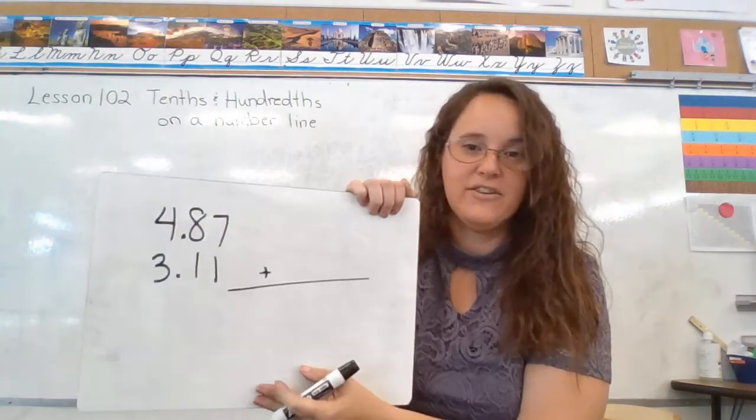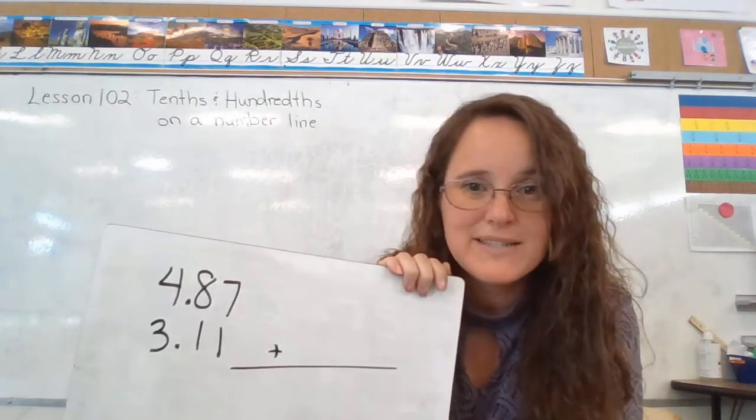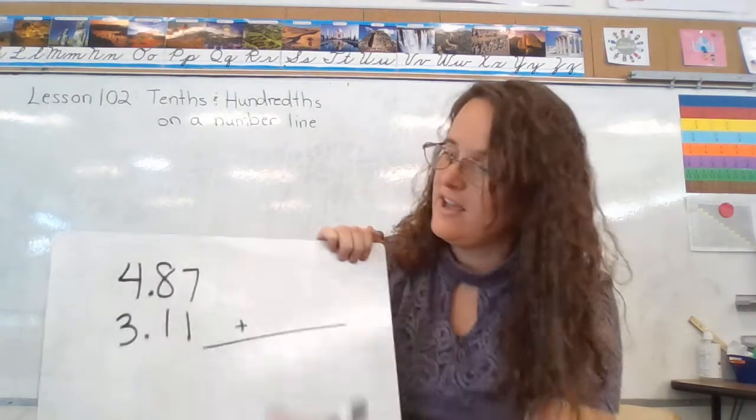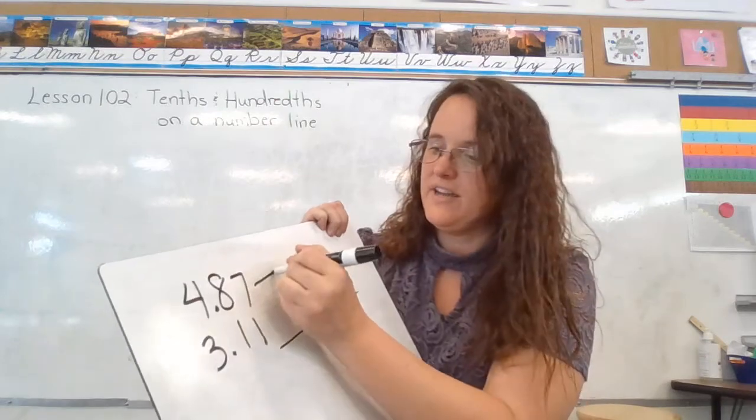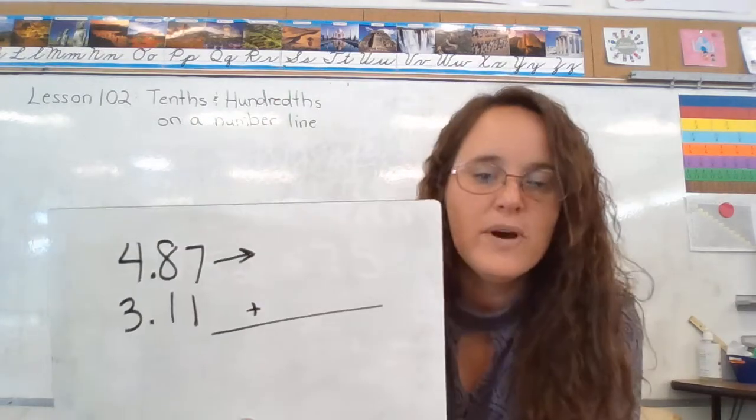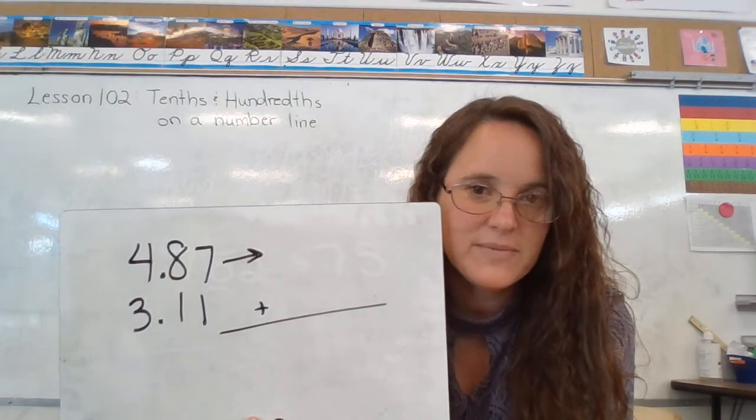So I'm going to add over here, and then I want to estimate. That means make it easy to do in my head. So 4 and 87 hundredths, what would the nearest whole number be for this one?